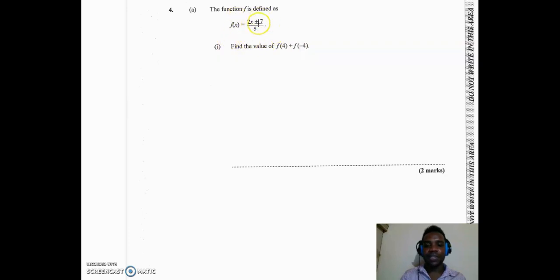My x value represents my domain values, and those are the values that I plug inside of the function to get out f of x, which represents my range. So when it says find the value of f of 4, it means that in the place of x I'm going to be putting 4 and also putting minus 4. This is something we can do simultaneously.